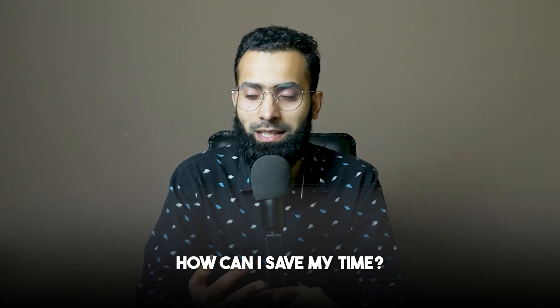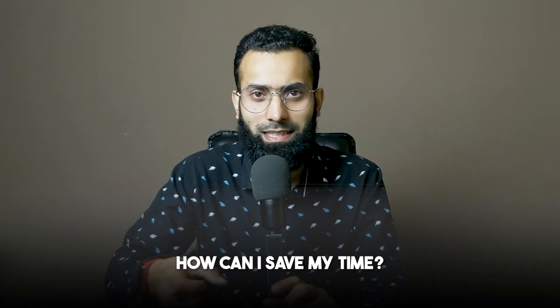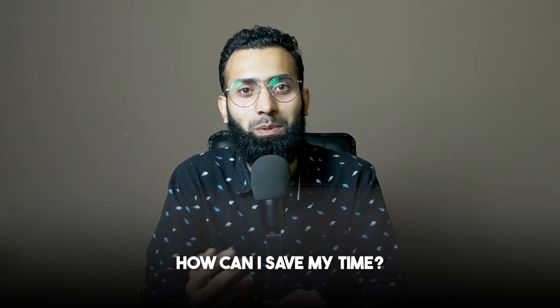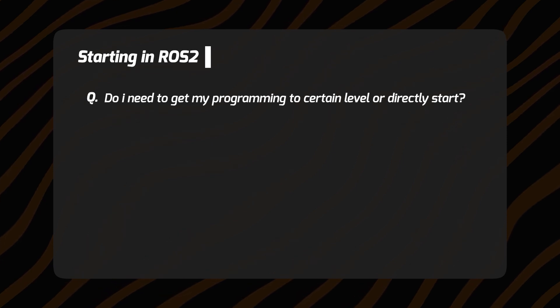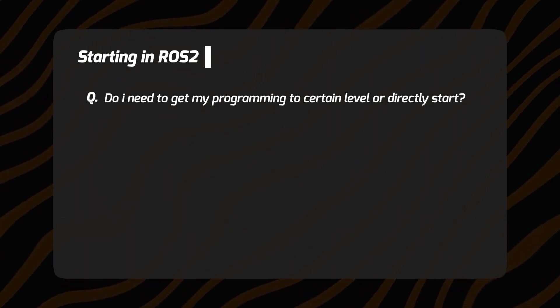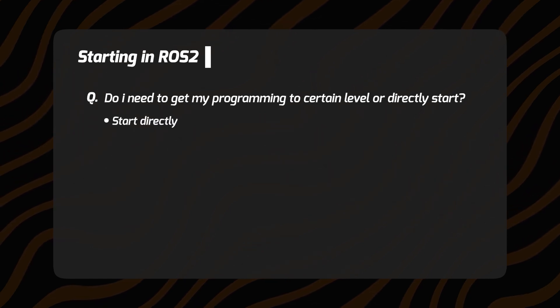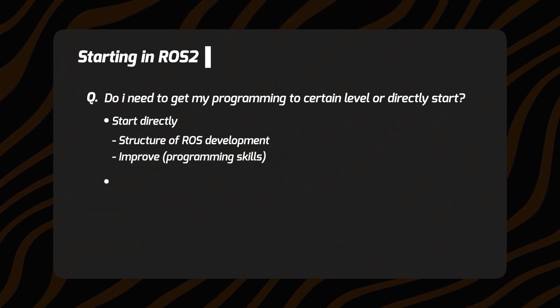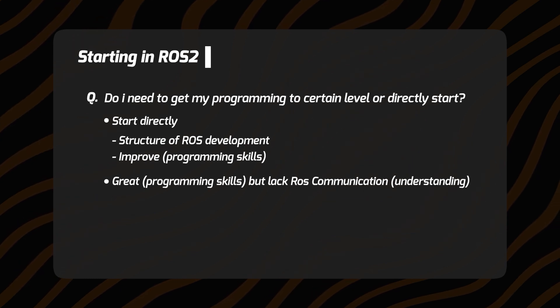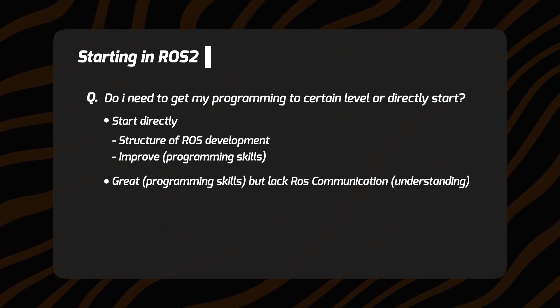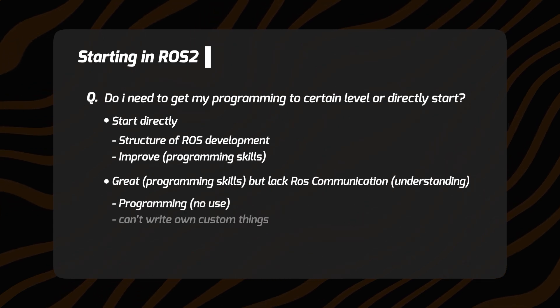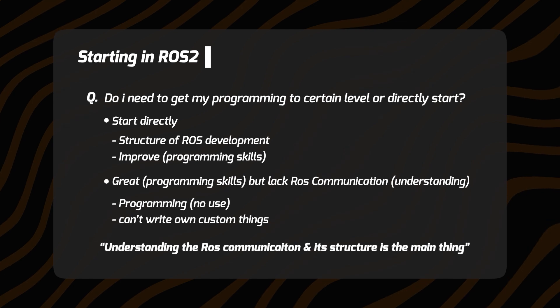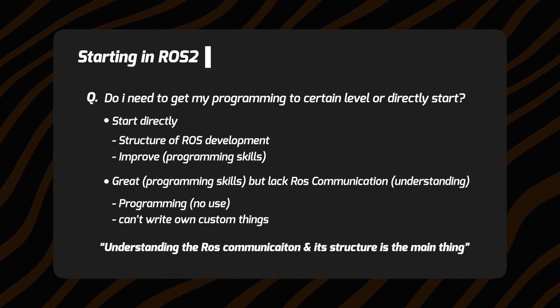The real question is: how can I save time by not diving too deep into ROS2 and just getting the information I need? This is a critical question for people who are starting out. A lot of people ask whether they need to get their programming to a certain level first or should directly start ROS. I recommend starting directly with ROS because you need to absorb the structure of ROS development and you can improve your programming skills iteratively. But if you have strong programming skills and don't understand how ROS communication and its packages work, programming is of no use because you can't write your own custom things. In a nutshell, understanding ROS communication and its structure is the main thing.